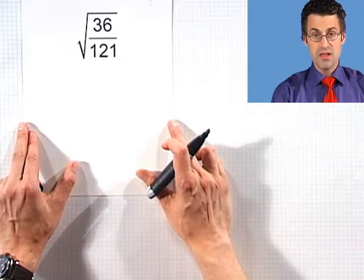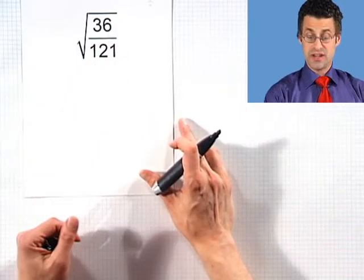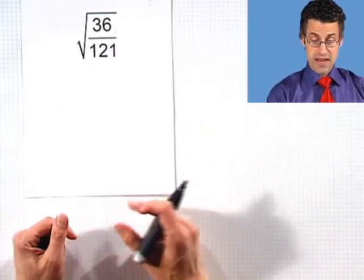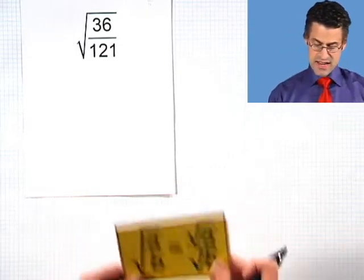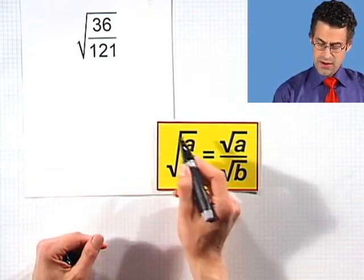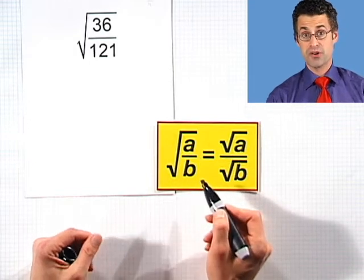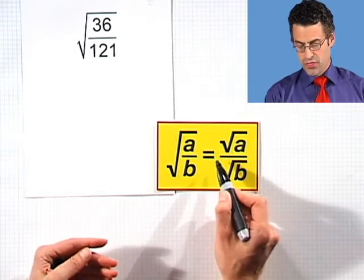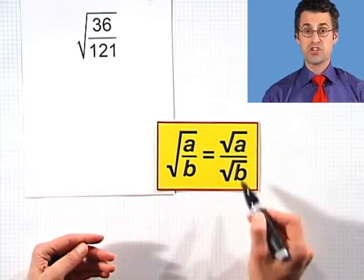There's a similar property for division. Let's take a look. So here I have the square root of 36 divided by 121. And it turns out that with division, we have the same property holding.